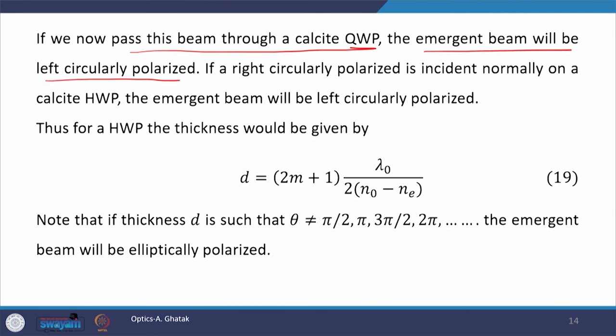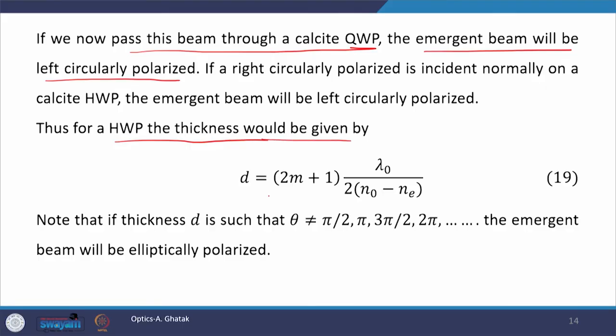If instead of linearly polarized light, you launch right circularly polarized light normally on a calcite half wave plate, the emergent beam will be left circularly polarized. The half wave plate thickness is given by equation 19. Note that if the thickness d is such that θ is not equal to π/2, π, 3π/2, or 2π, then the emergent beam will be elliptically polarized.